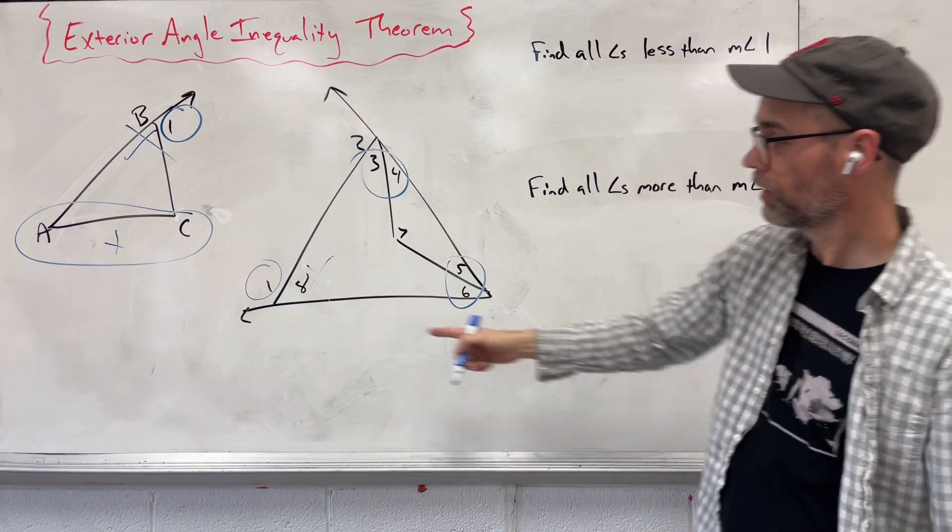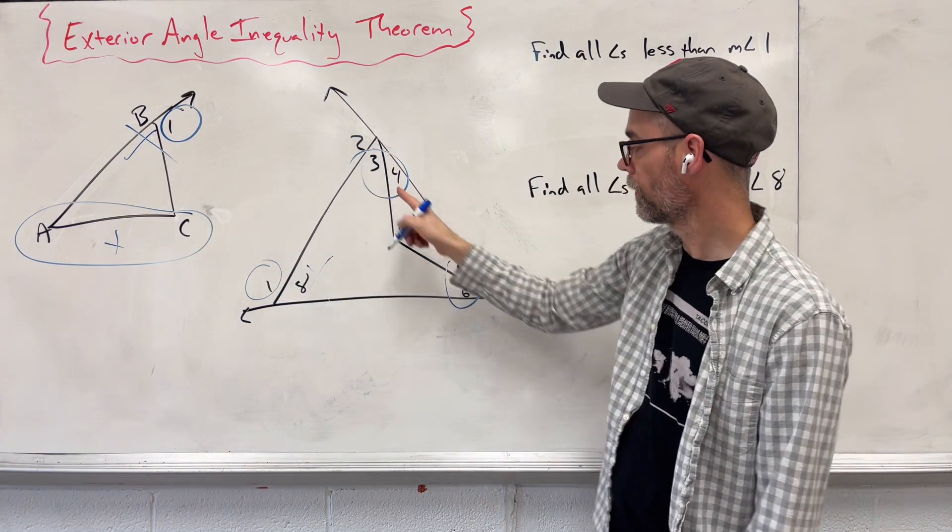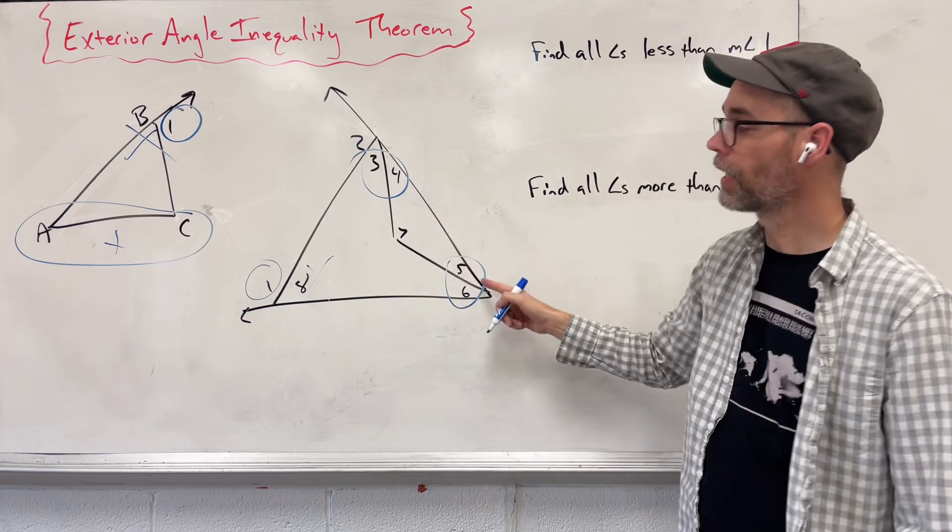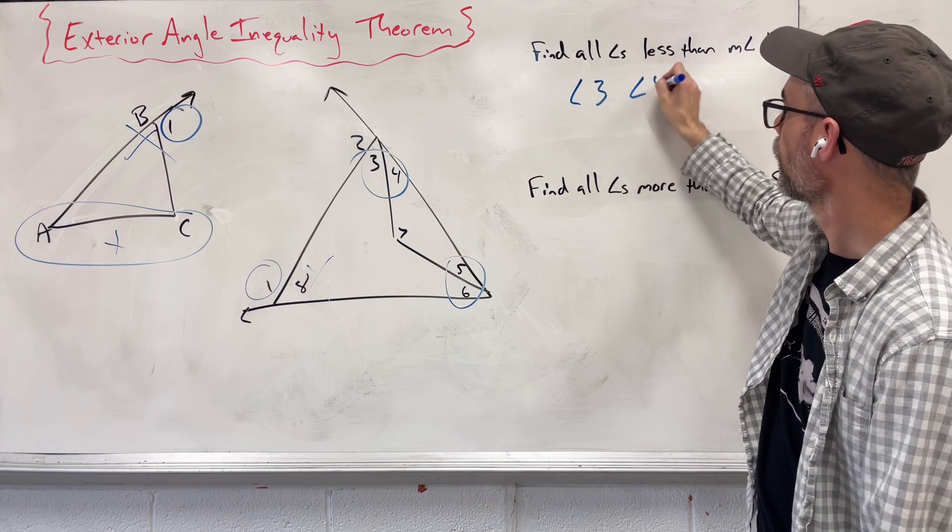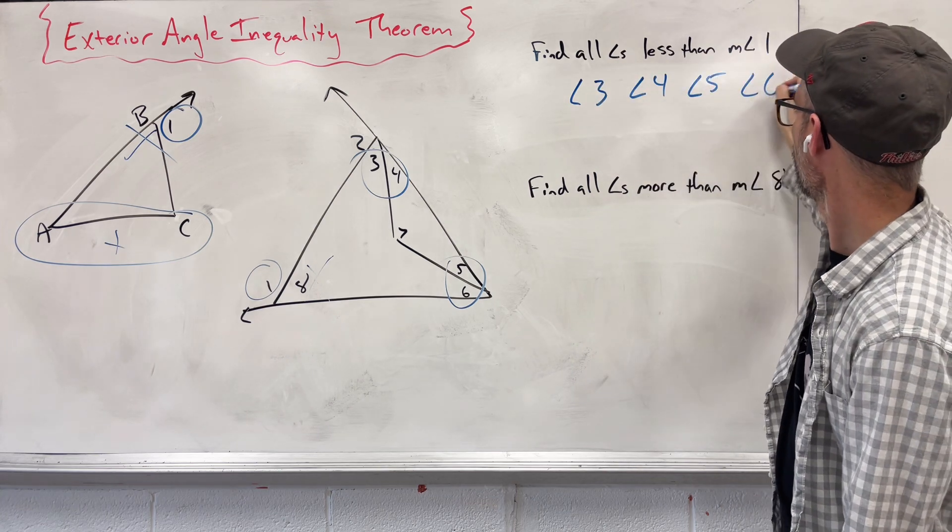Find all the angles less than 1. So individually, 3, 4—together added up they all are the same. So individually, they all have to be smaller. So we're going to say angle 3, angle 4, angle 5, angle 6.